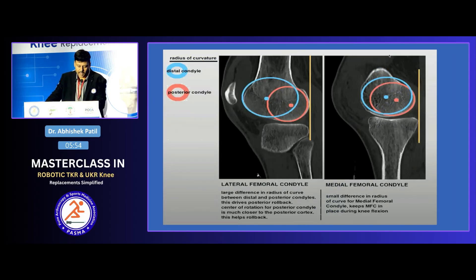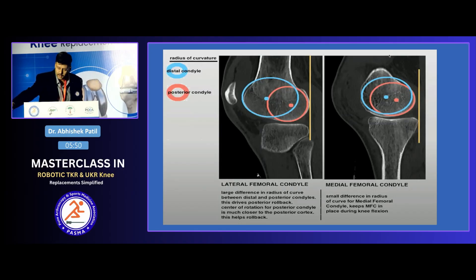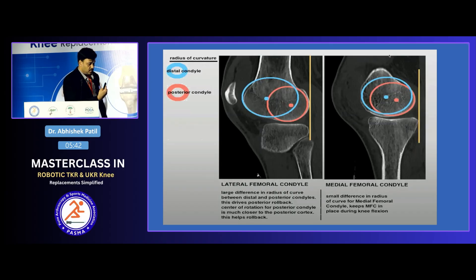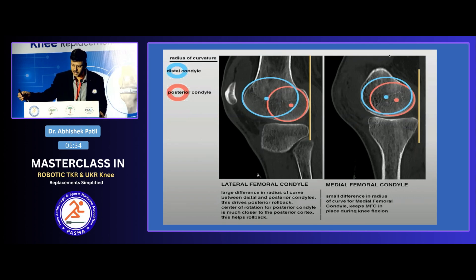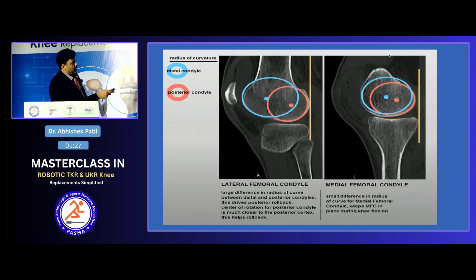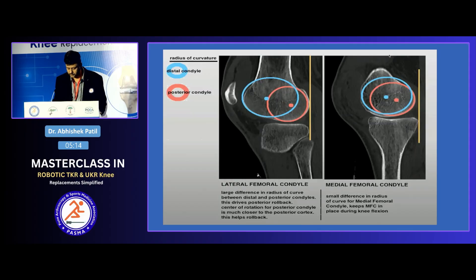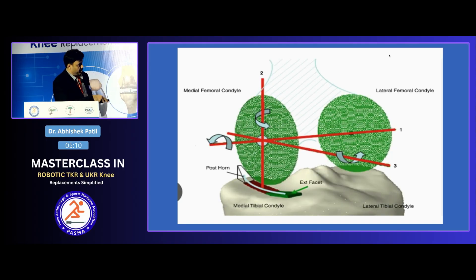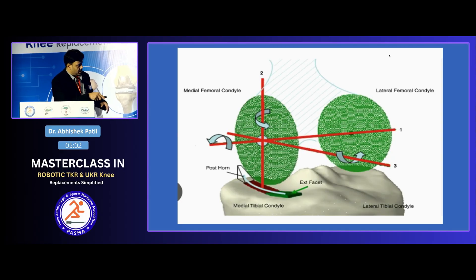The blue circles represent the radius of curvature of the distal condyle, and the red circle represents the radius of curvature of the posterior condyle. On the lateral side, the difference in radius of curvature between the distal and posterior is quite significant, but on the medial side they are more or less close to each other. This results in the medial side being less mobile and the lateral side more mobile — the medial side acts like a pivot, and the AP glide and internal-external rotation happen more on the lateral side.